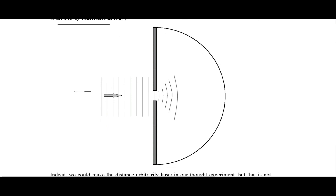This is our electron coming in as a plane wave. When it comes through the slit, it becomes a Gaussian wave packet which will then spread out into this chamber here, which has a detector making a semicircle around it, so that the spreading Gaussian wave could impinge on any part of this detector.